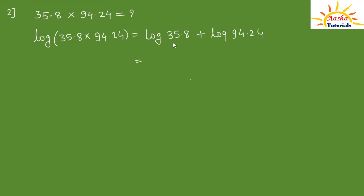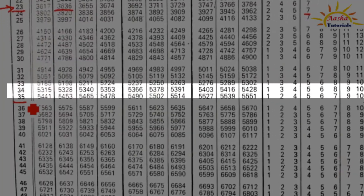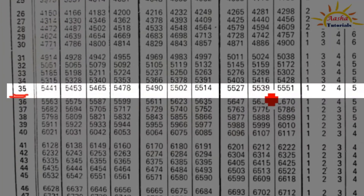Finding log of 35.8: this is a 2-digit number so the characteristic value is 1 (which is 2 minus 1). We find the log of 35 in the 8th column, which is 5539. So log of 35.8 is 1.5539.